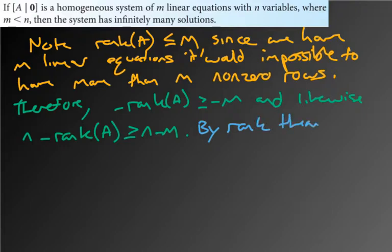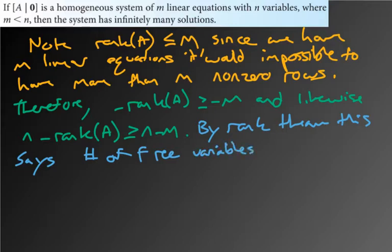this says that the number of free variables is greater than or equal to N minus M. But since M is less than N, we can also say that that has to be greater than zero, right? So,